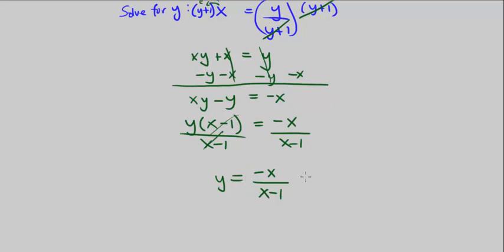We can keep it like this, or we can get rid of this negative by factoring out a negative 1 in the denominator. When you factor out a negative, it makes it negative x plus 1, because we're factoring in a negative.